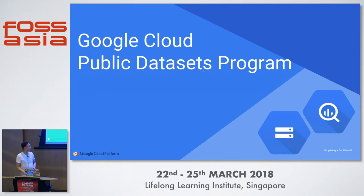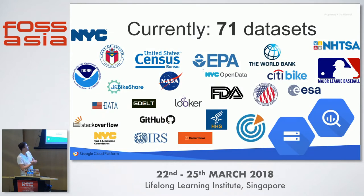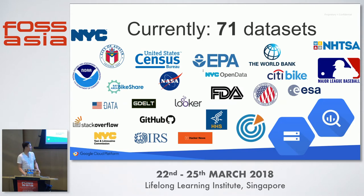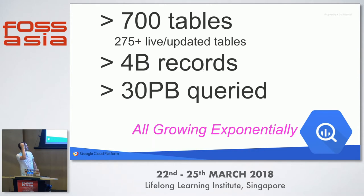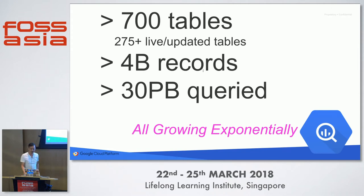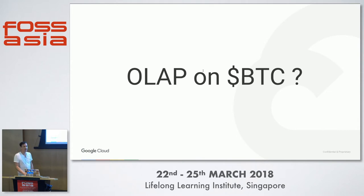As part of BigQuery we have the Public Datasets program. The Bitcoin dataset is part of this — it's effectively open data. As of October we had 71 different public datasets. The tables are world-readable and there's a free access tier: you can query up to 500 gigabytes of data per month without paying, you just need a Google Cloud account. In aggregate there are more than 700 tables, many updated regularly. The Bitcoin table updates every 10 minutes — as often as a block is produced. We've got in excess of four billion records and more than 30 petabytes of total query data.